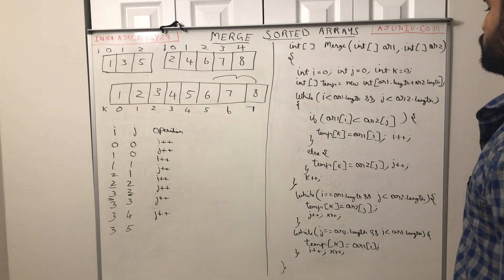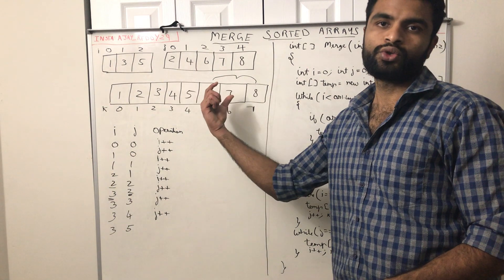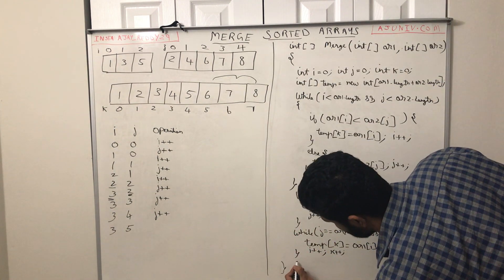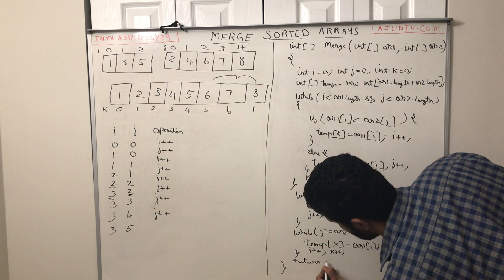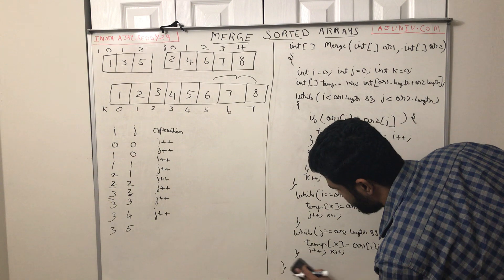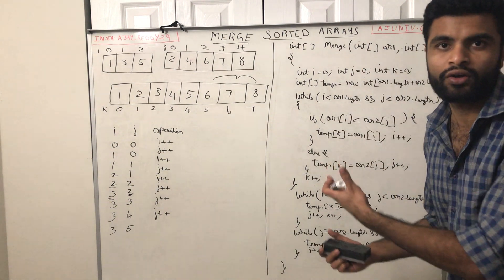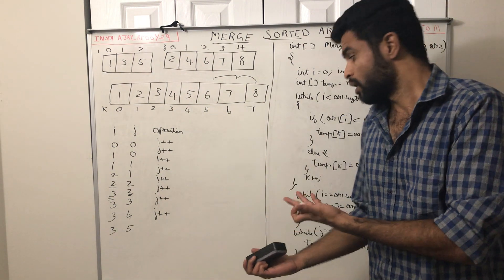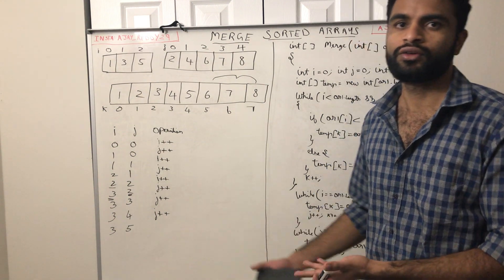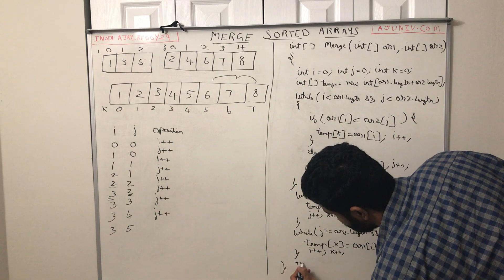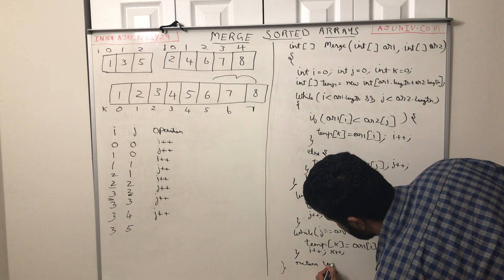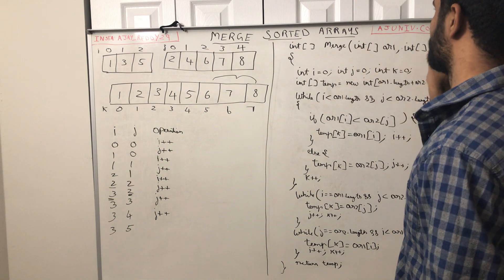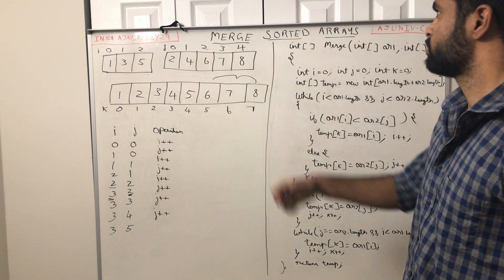That's it — by this way you can merge the two arrays into a new temporary array. Finally I write return temp, returning the temporary array which contains the merged result of both sorted arrays. This is the complete solution for merging sorted arrays. Don't worry if the code is not completely clear — I will post this code in the description of this video so you can get it from there.